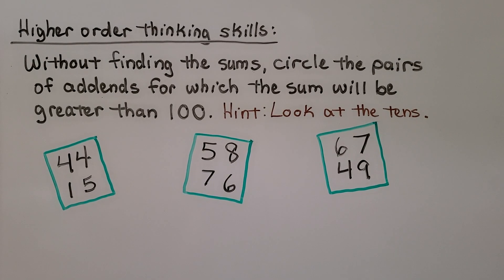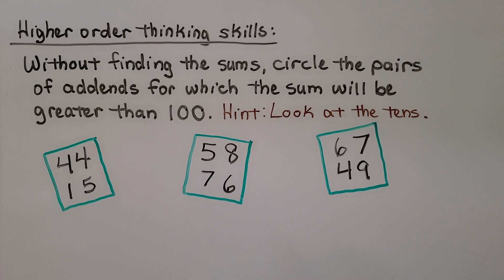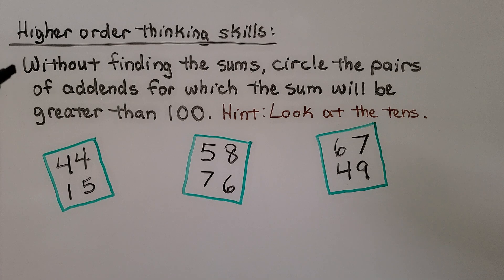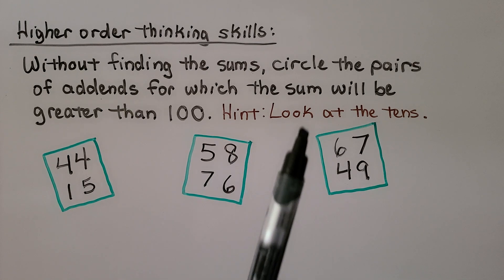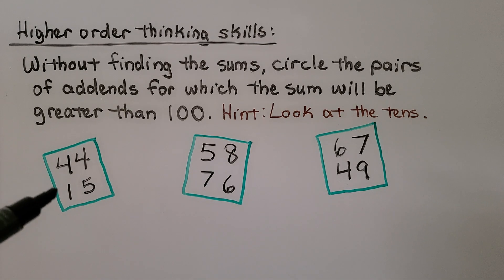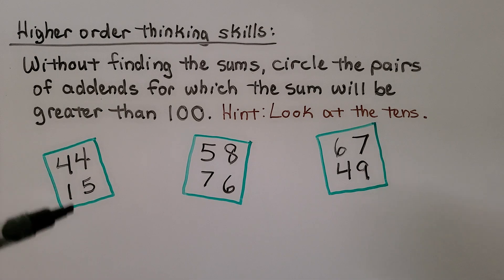Now let's try some higher order thinking skills. It says, without finding the sums, circle the pairs of addends for which the sum will be greater than one hundred. Without actually adding them and finding the sums, we need to circle the pairs whose sums are greater than one hundred. The hint is to look at the tens. If we add forty-something and fifteen, do you think that's going to be more than one hundred? No, that's not going to be more than one hundred.